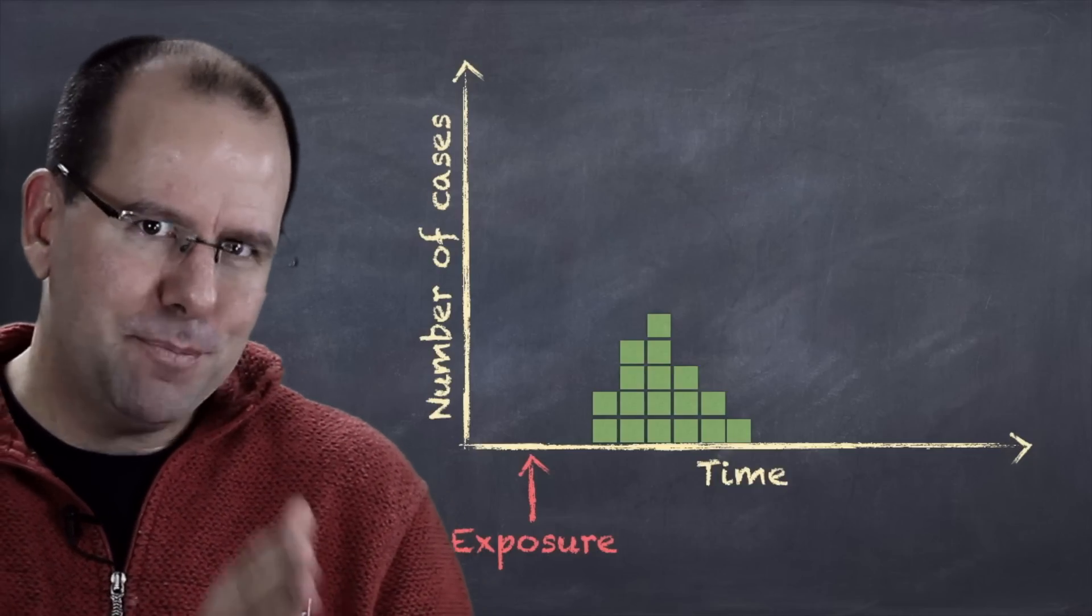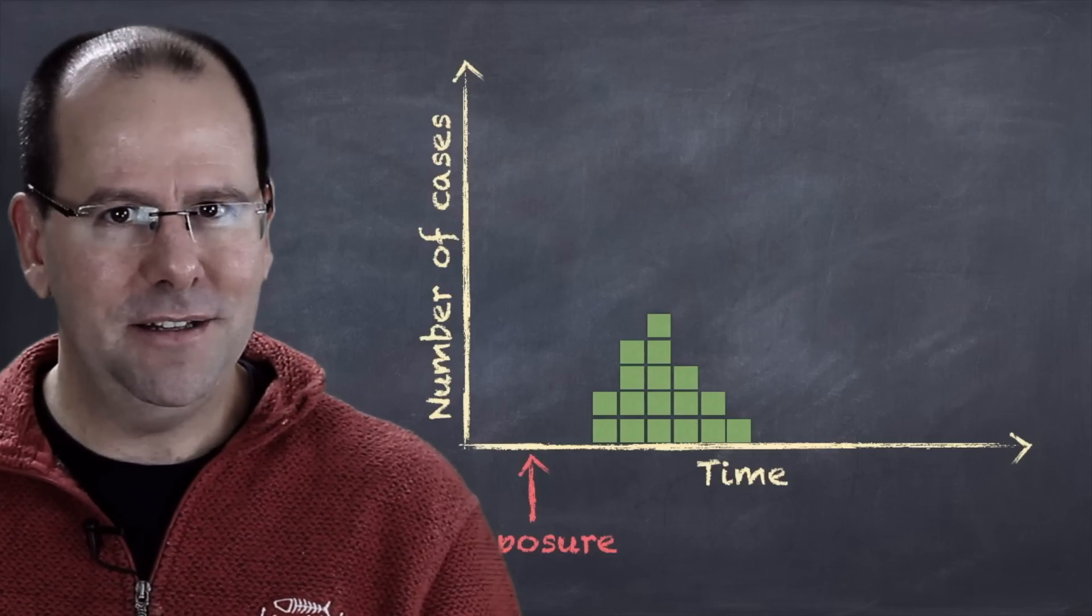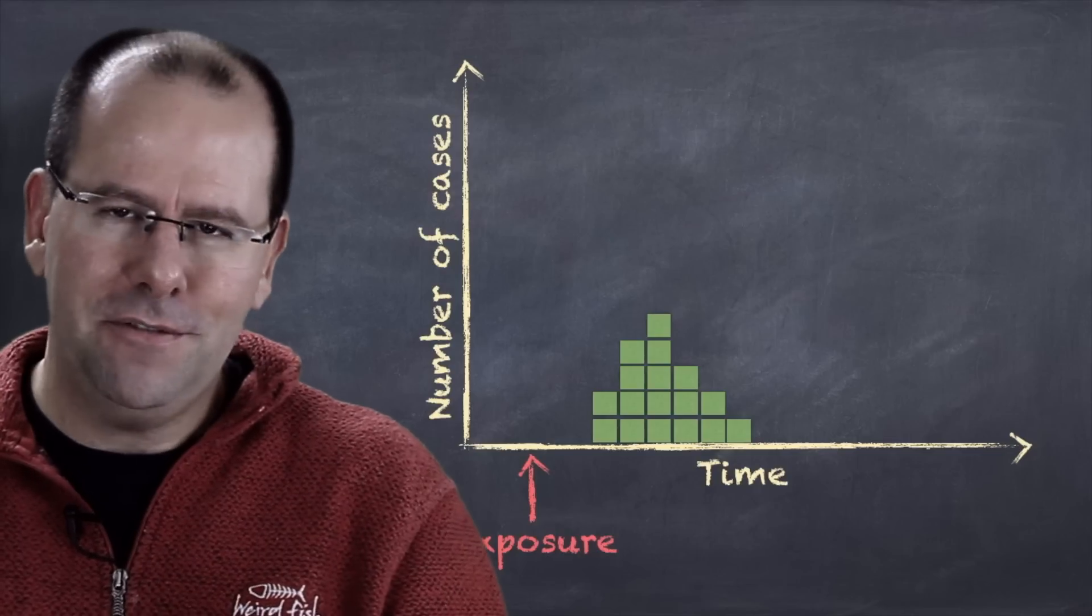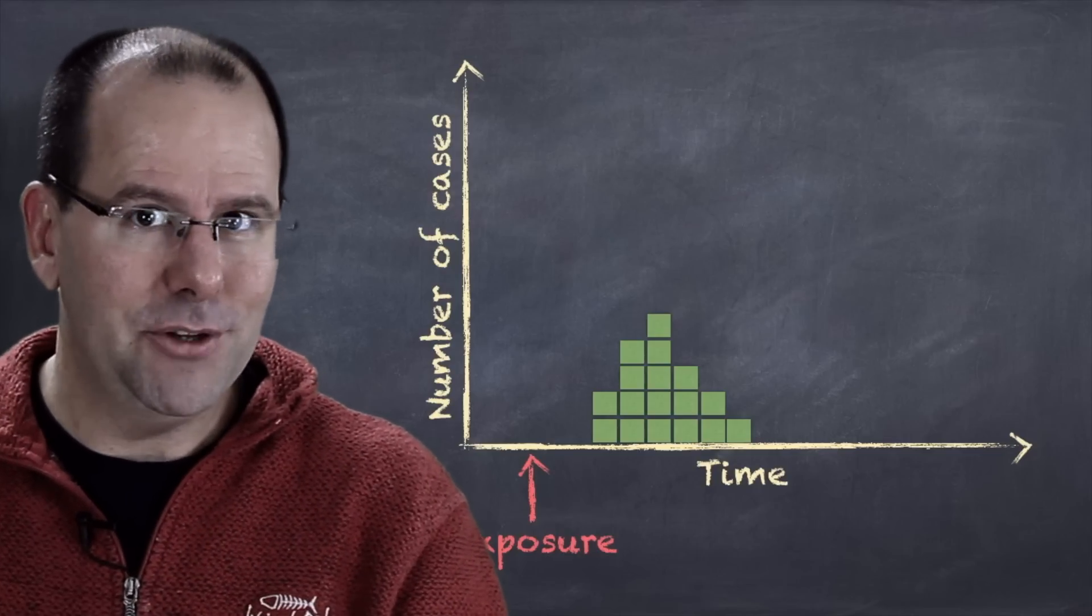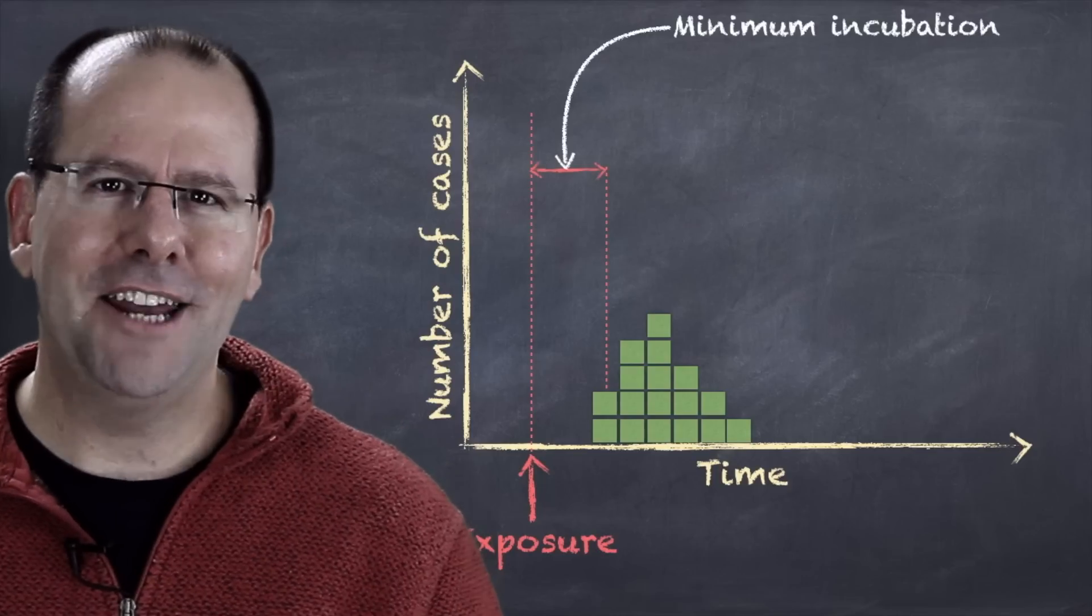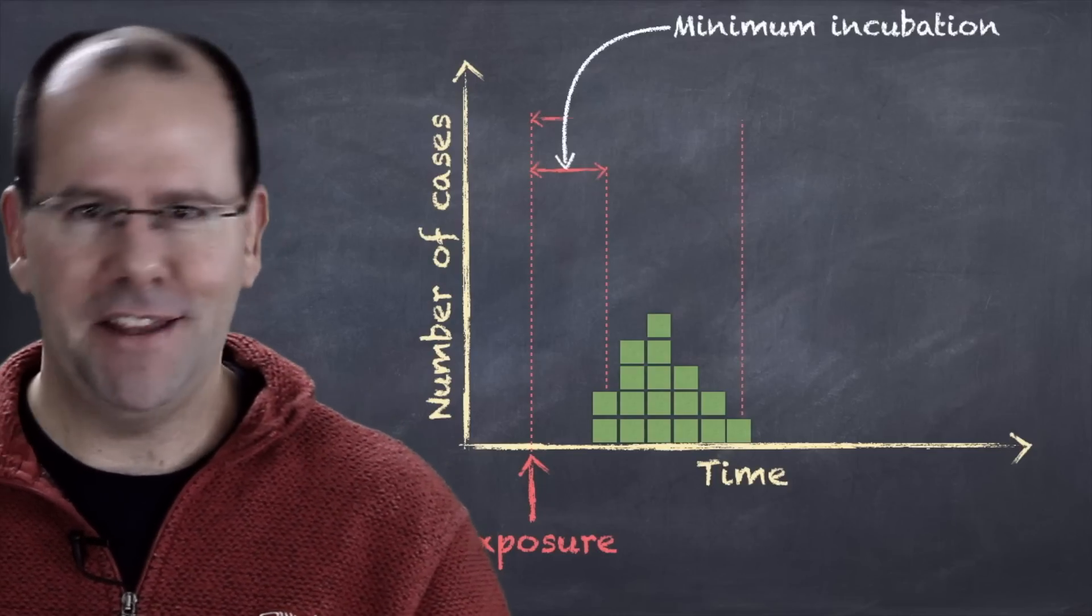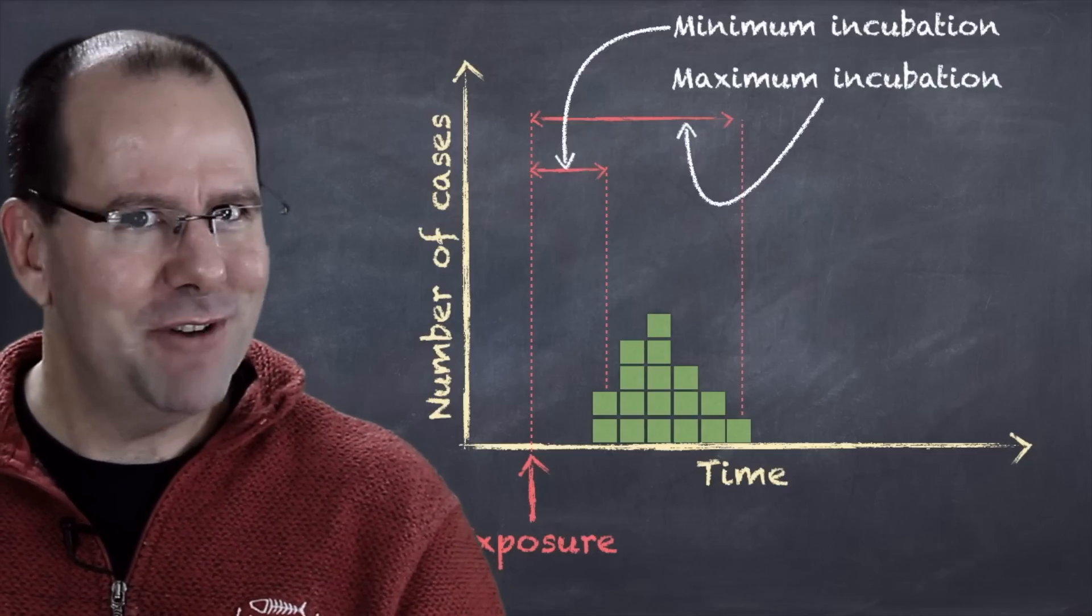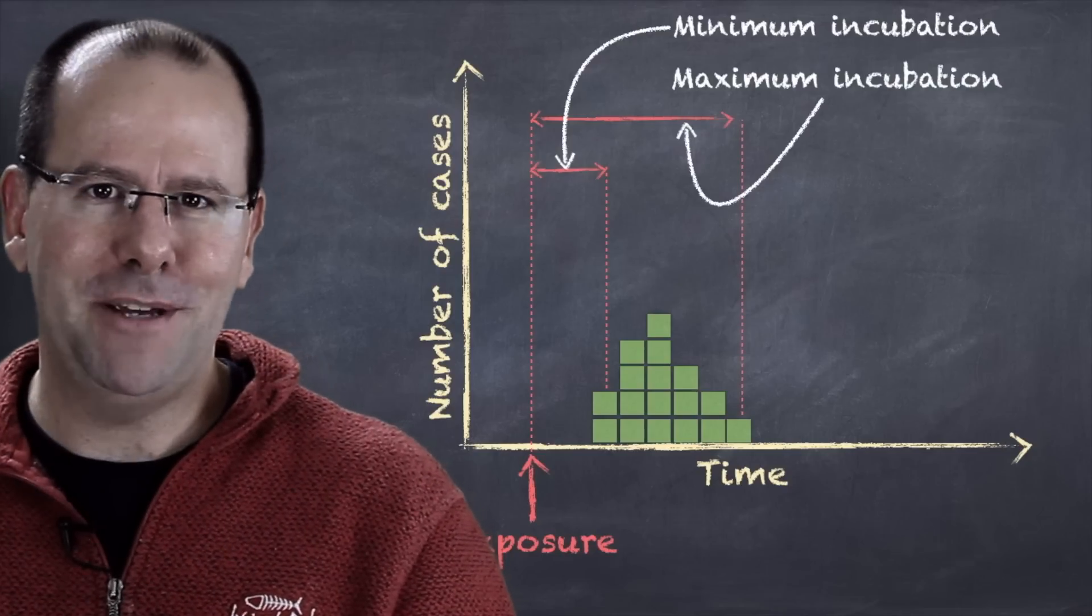Now the period of time between people being exposed to the pathogen and actually becoming ill is called the incubation period. For each infectious agent we know that there's a period of time during which nobody gets ill, even though they've been exposed, we call that the minimum incubation period. And of course there's a maximum incubation period and that's a period of time after which nobody gets ill. So the epidemic curve really is a distribution of incubation periods.